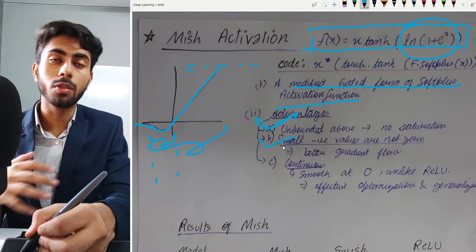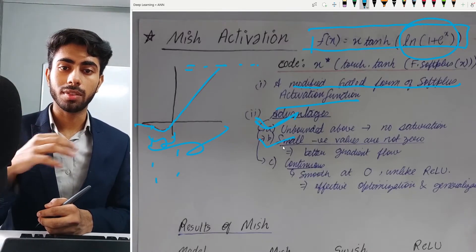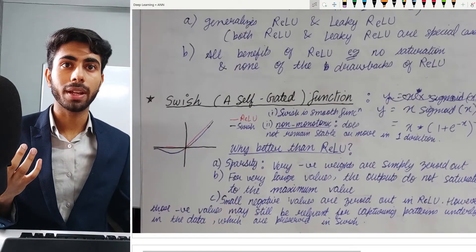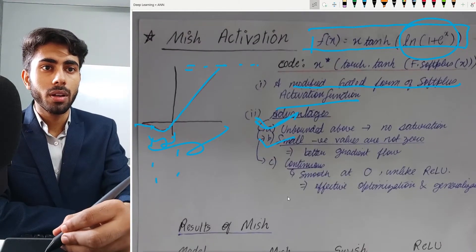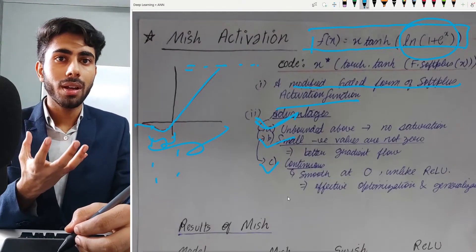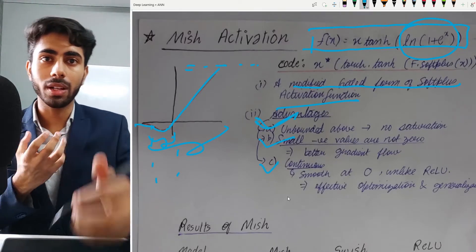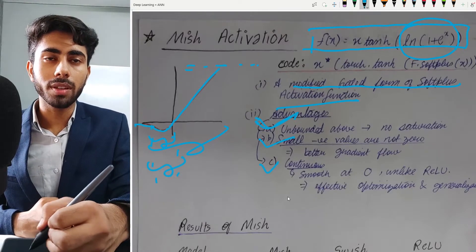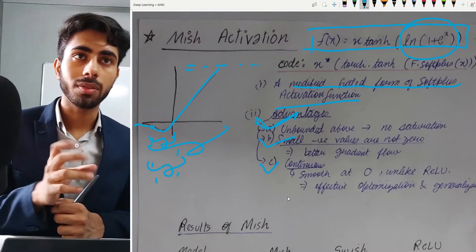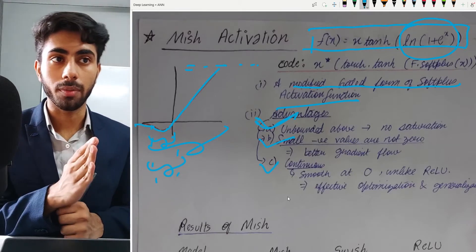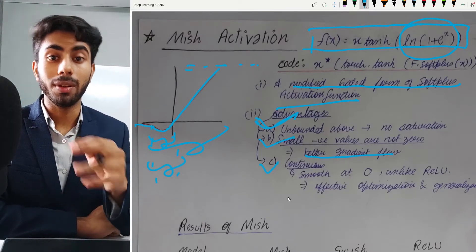The second advantage is that for small negative values there will be some output, and for increasingly negative values there will be no output — they will be zeroed out. This is the same curve that was seen during the swish activation. Because the activation function gives output for small negative inputs, there will be a better gradient flow, and therefore the efficiency of the model will increase.